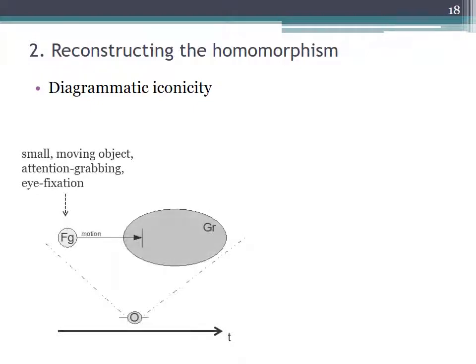Schematized, one could give the following perceptual or conceptual structure. A small moving object grabs the observer's attention and he fixates it visually and follows its trajectory relative to a ground. All this happens in time.